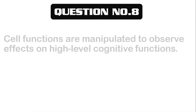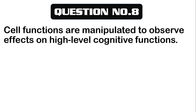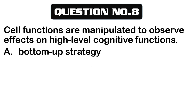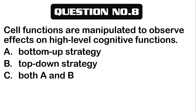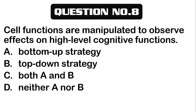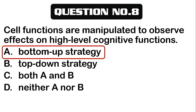Number 8. Cell functions are manipulated to observe effects on high-level cognitive functions. A. Bottom-up strategy. B. Top-down strategy. C. Both A and B. D. Neither A nor B. The correct answer is letter A, bottom-up strategy. Cell functions are manipulated to observe effects on high-level cognitive functions — bottom-up strategy.